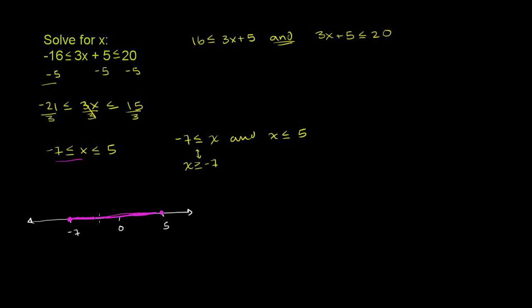And let's verify just by sampling a few points. So let's try out 0. 0 should work. If we put 0 here, we get negative 16 is less than or equal to 3 times 0 plus 5 is just 5, which is less than or equal to 20. This is true. 5 is greater than negative 16, and it is less than 20. So that works.